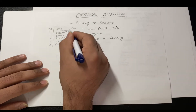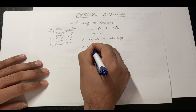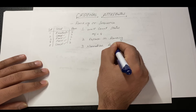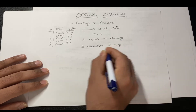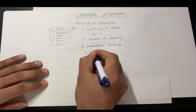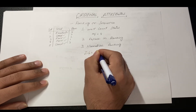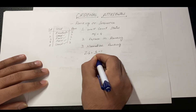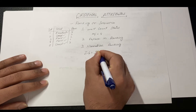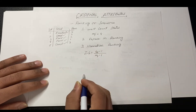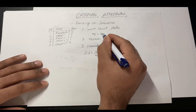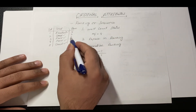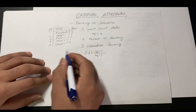The third step is to normalize the rank. We use the formula: (rf minus one) divided by (mf minus one), where mf is the number of states (four) and rf is the ranking value for each state.